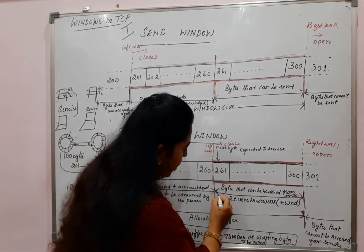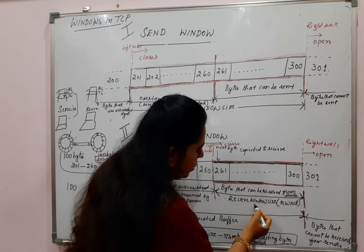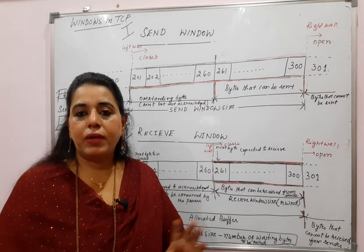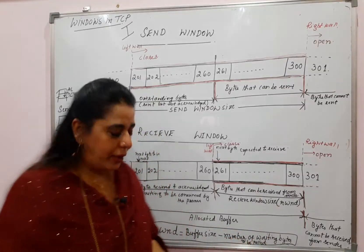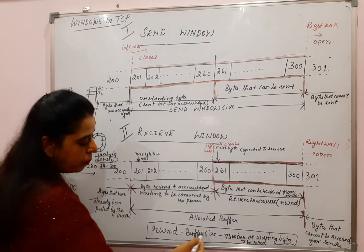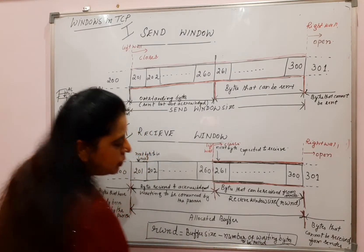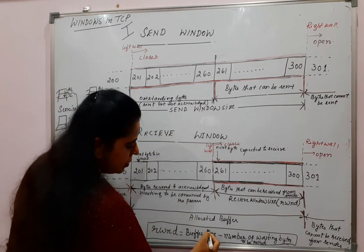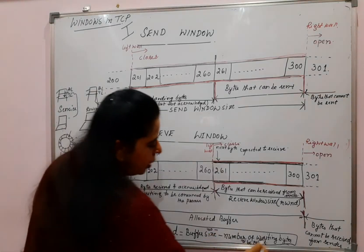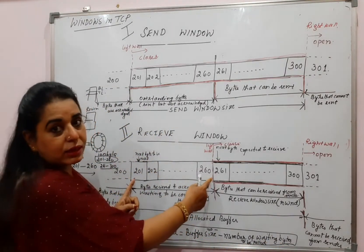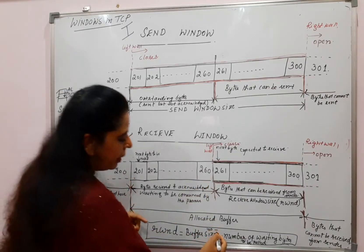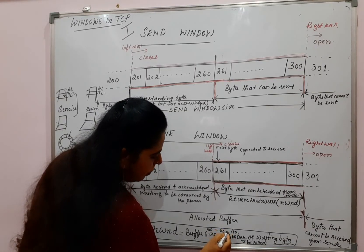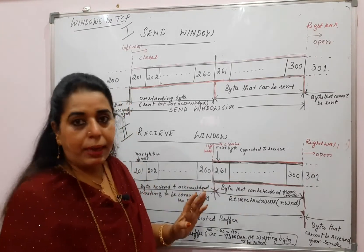Whereas in the send window size, the complete allocated buffer itself is the send window size. But at the receiver side, only the available empty locations become the receive window size — called RWND. Popularly in most textbooks, the word used is RWND. How to calculate RWND? RWND equals buffer size minus number of waiting bytes to be pulled. Buffer size is 100, minus 60 bytes waiting to be pulled by the application layer, equals 40. So 40 bytes is the receive window size, RWND, in this example.